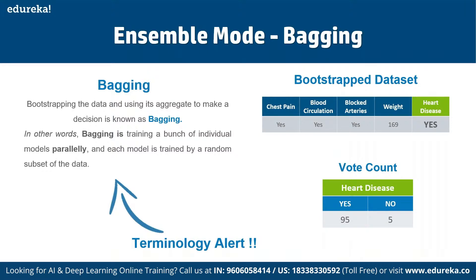For example, a bootstrap data set might include variables like chest pain: yes, blood circulation: yes, blocked arteries: yes, weight: 169. With bootstrapping, the yes count might be 95 and the no count might be 5 as part of the bootstrapping model.